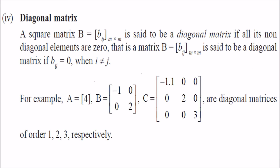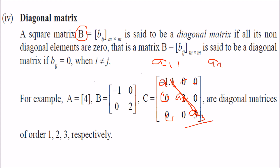A diagonal matrix is a square matrix whose non-diagonal elements are all 0; the diagonal elements a_11, a_22, a_33 can be any value, but all off-diagonal entries must be 0.